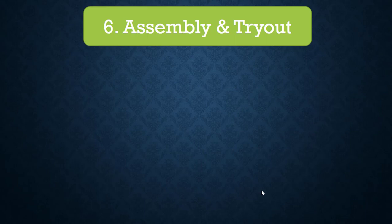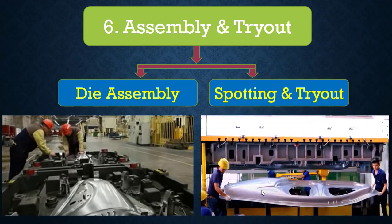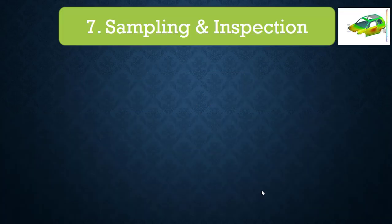Number 6 is assembly and tryout. Under die assembly, all the components manufactured in-house and bought out from suppliers are assembled as per the die design and drawing, verifying all the quality before it goes for spotting and tryout. The spotting and tryout activity involves checking the clearance, making surface contacts, and taking the initial samples.